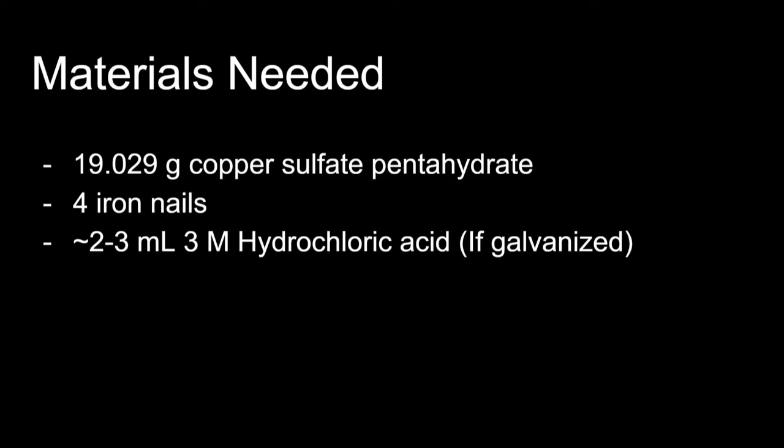The materials that are needed to prepare the copper powder include 19.029 grams of copper sulfate pentahydrate, four iron nails, and about 125 milliliters of distilled water.